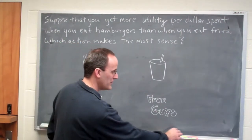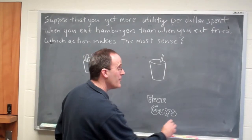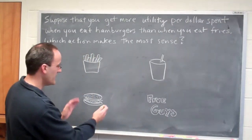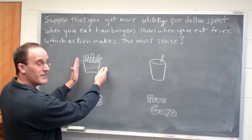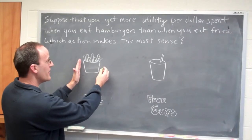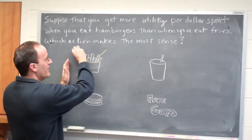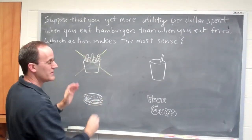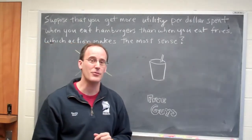That's going to allow us to eliminate one of the options. Clearly, the hamburger option is better than the fries, so I'm going to go ahead and cross that out. That leaves us with three choices: the hamburger, the drink, or going to Five Guys.